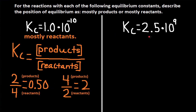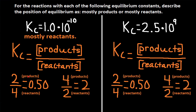For this one, Kc is equal to 2.5 × 10⁹. This would be a whole number. Using the same calculations: 2 divided by 4 is 0.50, and 4 divided by 2 is 2. When products are bigger than reactants, we get a whole number. So the answer to this one would be mostly products.